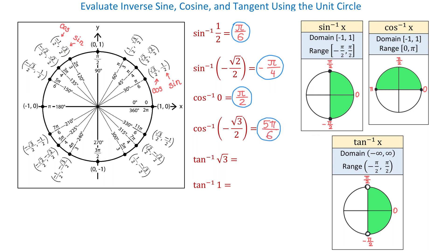Now let's talk about inverse tangent functions. The domain is any number from negative infinity to positive infinity, and the range is any angle between negative pi over 2 and positive pi over 2. Notice that for inverse sine the endpoints are included using brackets, but for inverse tangent the endpoints are not included. If we would use the unit circle to find tangent of pi over 2, we would need to divide y by x, but 1 divided by 0 is undefined.